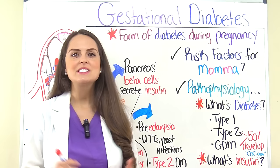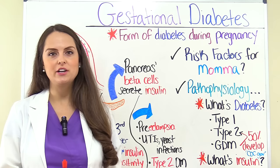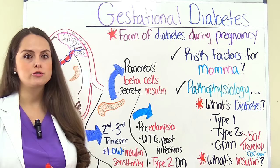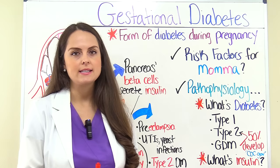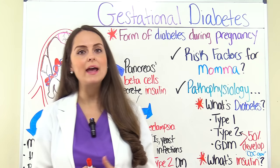Gestational diabetes is a type or form of diabetes that occurs during pregnancy. It tends to occur during the second or third trimester. To help us understand why a woman develops diabetes during her pregnancy, we need to lay out the risk factors for why a woman may be at risk for developing gestational diabetes.